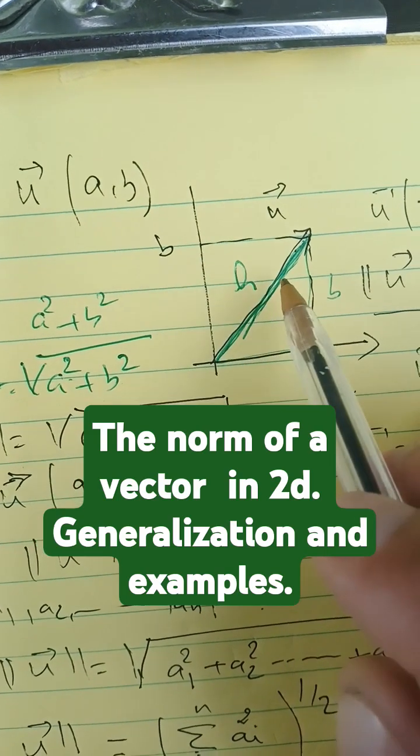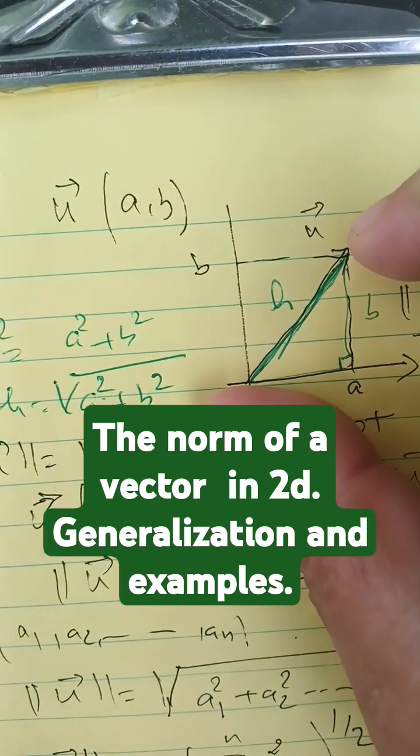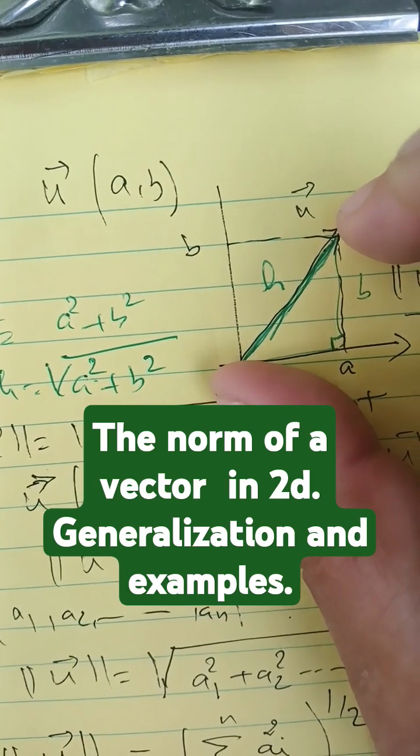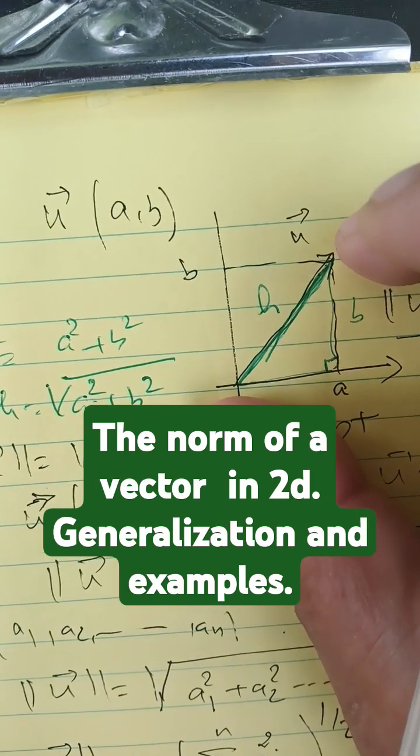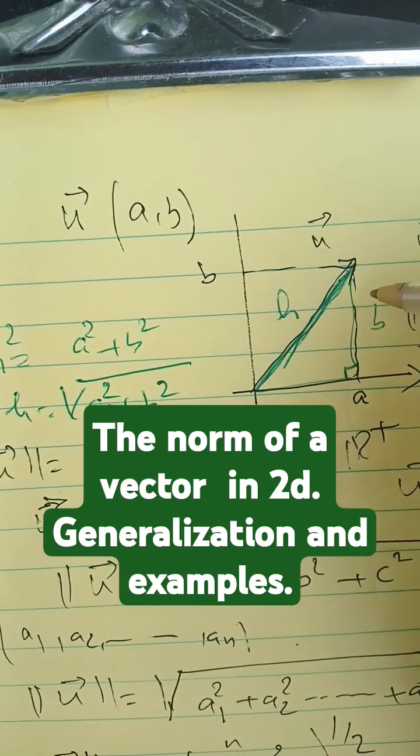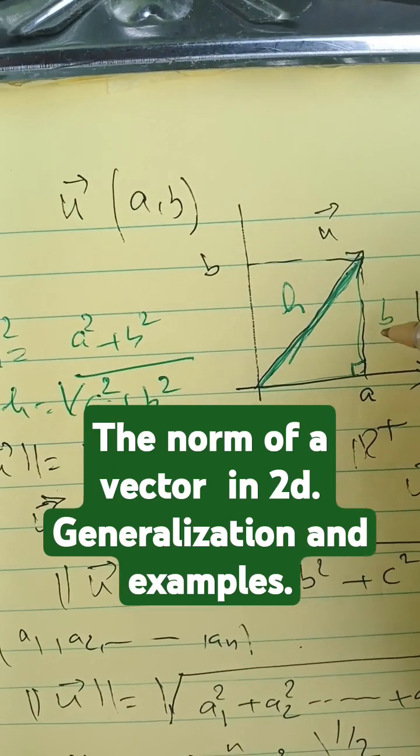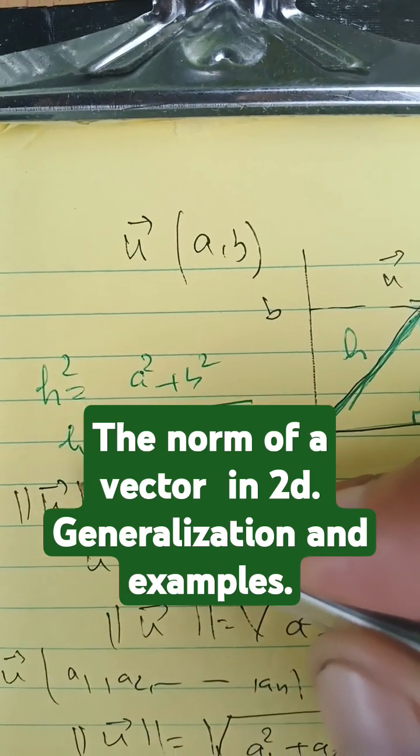the x coordinate and b as the y coordinate. If we want to compute the norm, which means the length of this segment here in green, we can use the Pythagorean theorem. We compute h squared, which is b squared plus a squared. To find h, we take the square root, and in this case we define